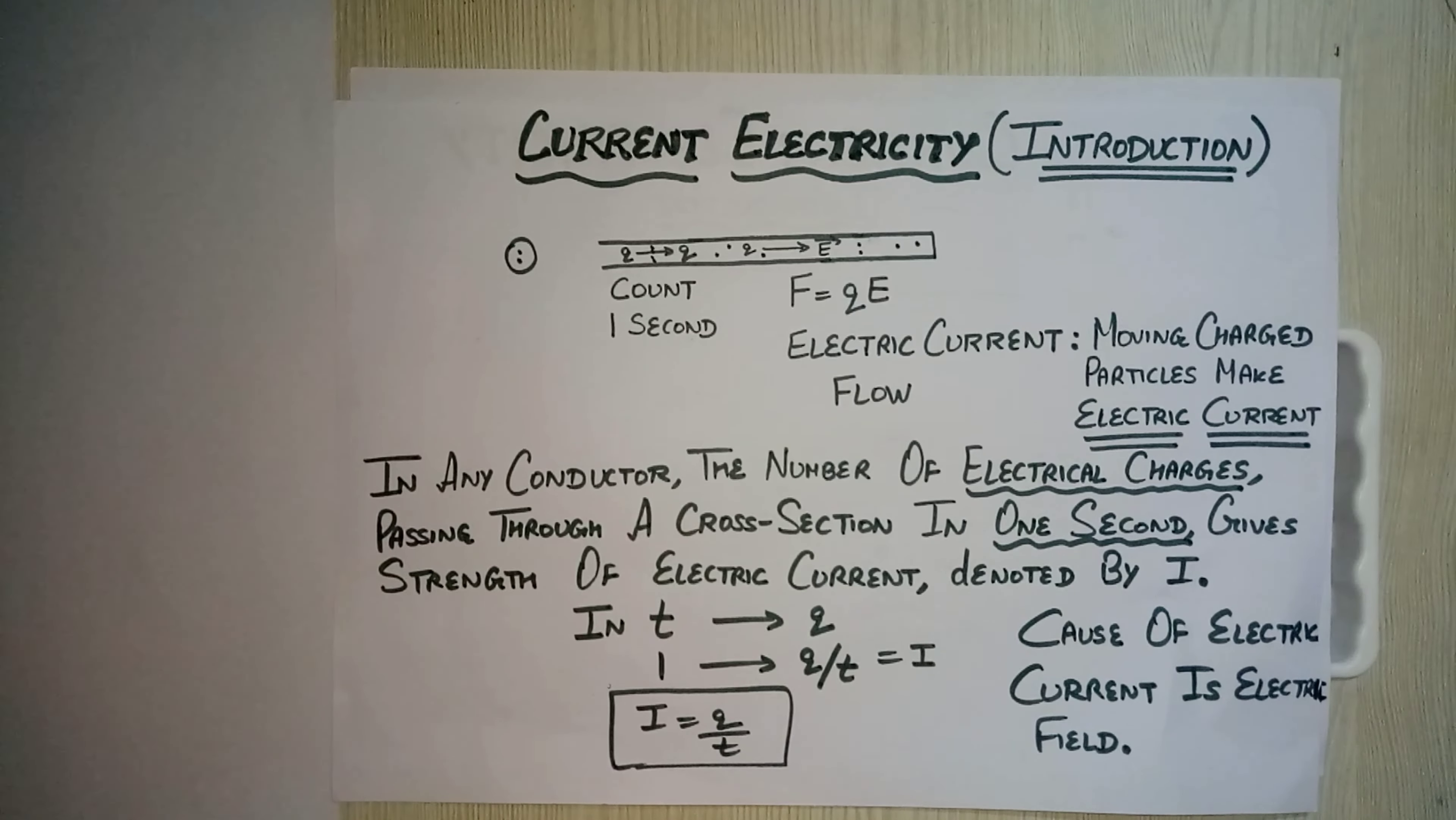Where it is flowing in any conductor and how do we count? Through a cross section at any one point. So this becomes the condition of electric current. So once again, what is electric current?